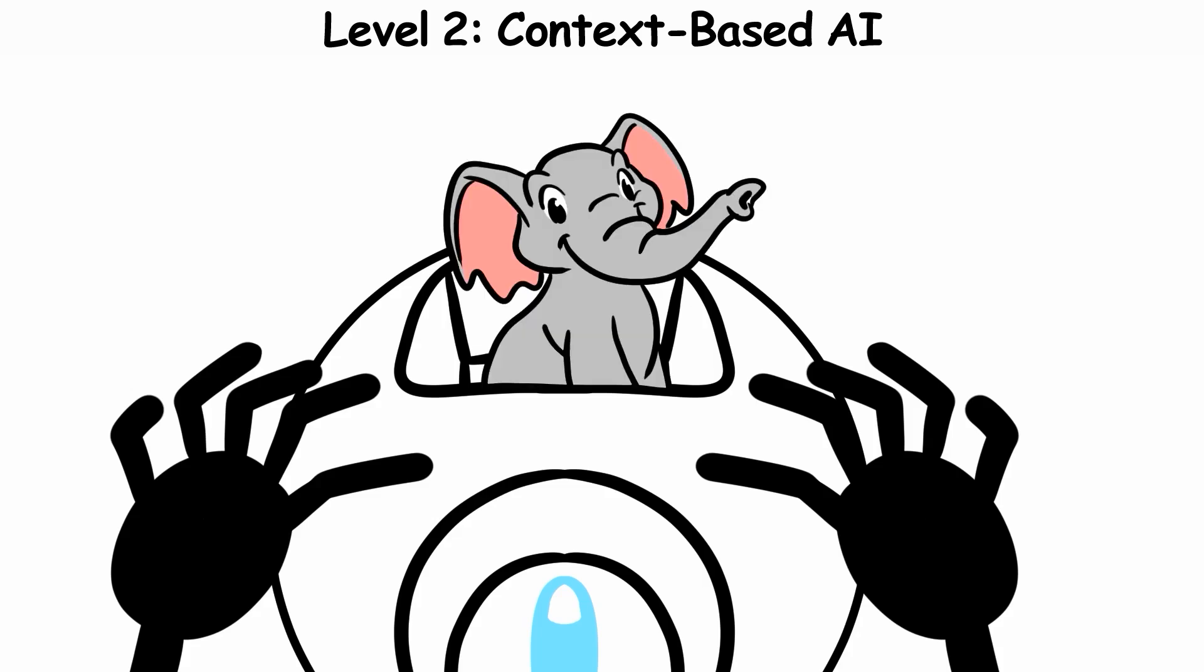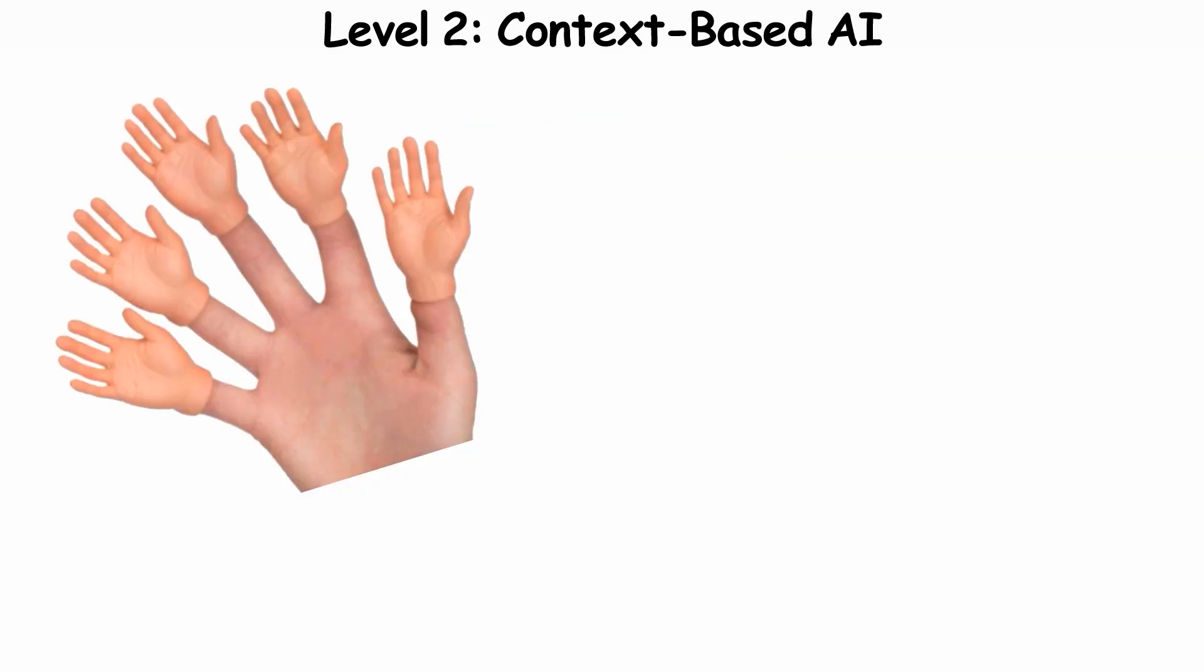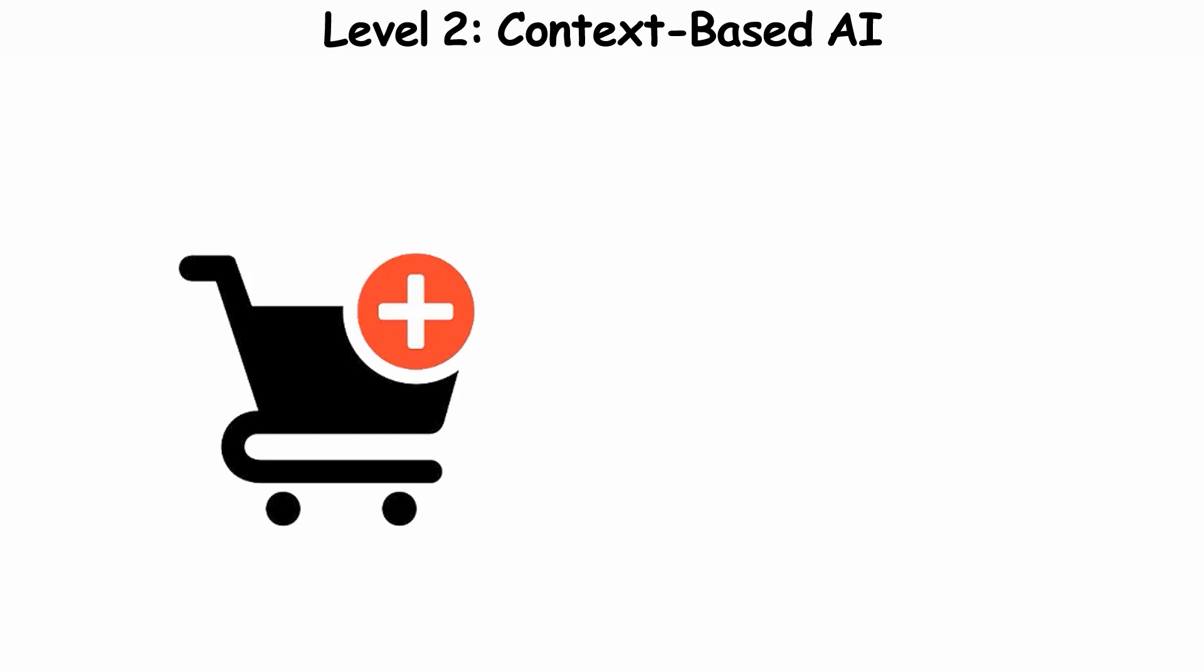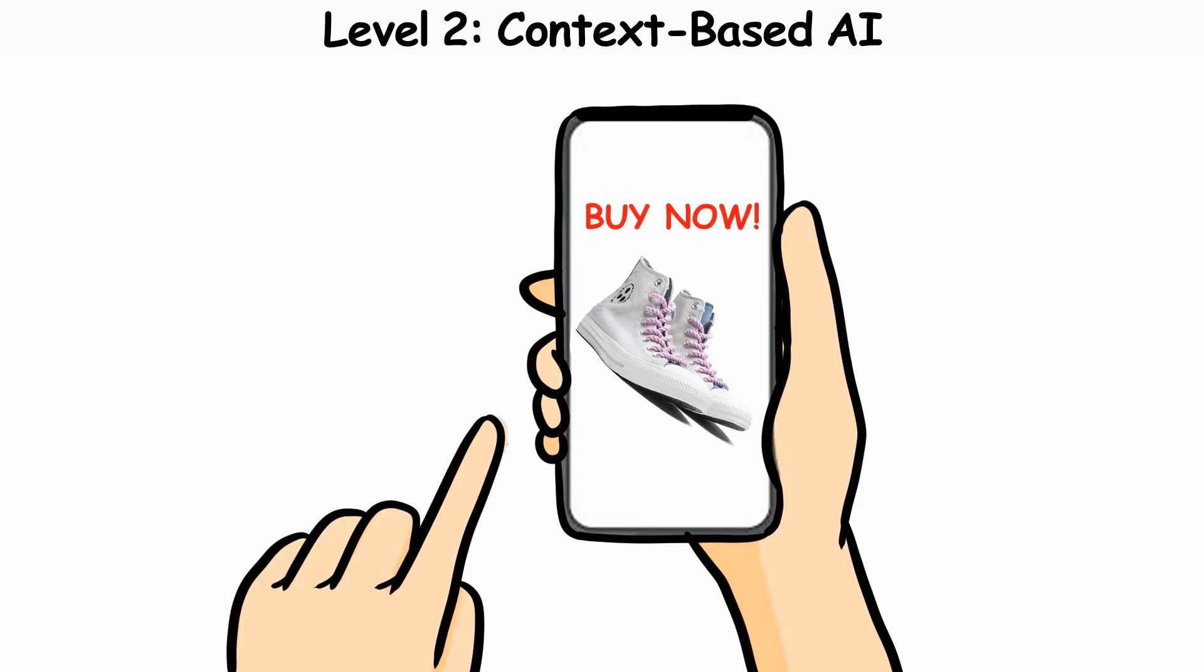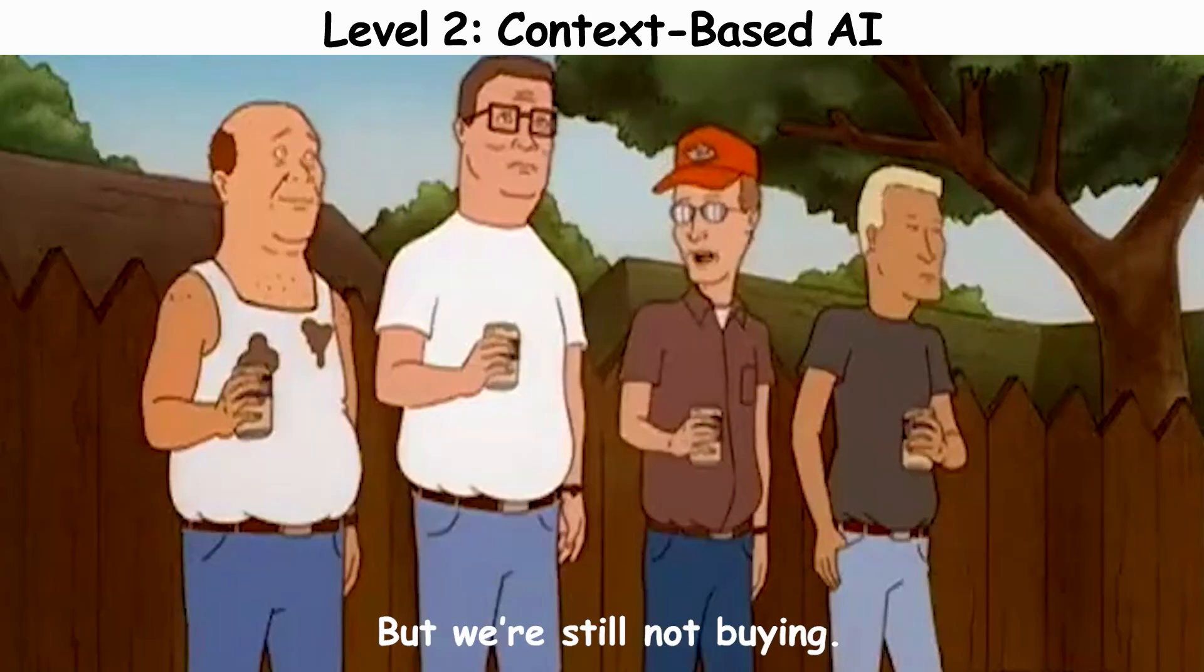These AIs have memory like an elephant. They never forget what you browsed, what you bought, or even what you lingered on but didn't purchase. That's why those shoes you looked at once follow you around the internet for weeks, showing up in ads that won't take no for an answer.